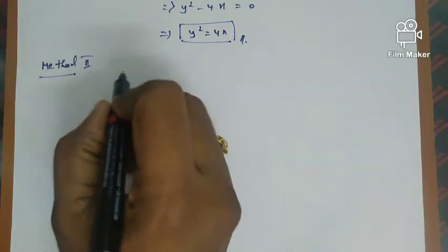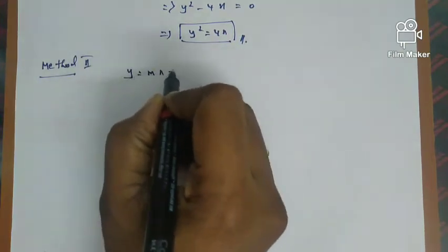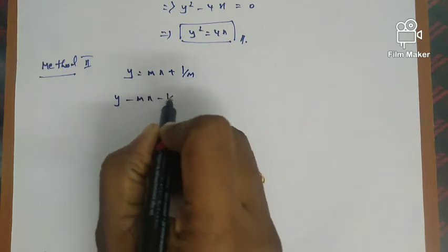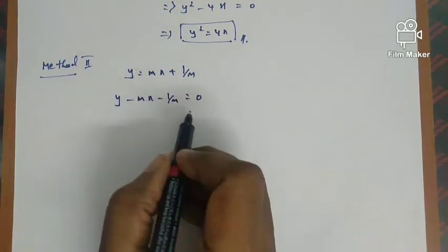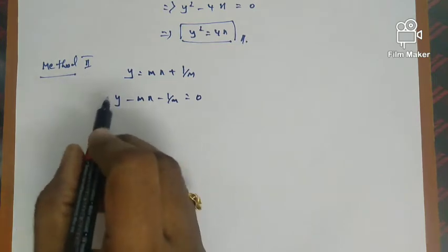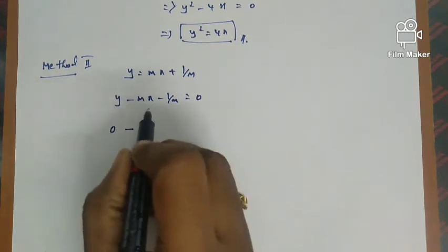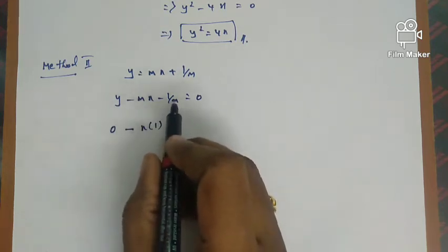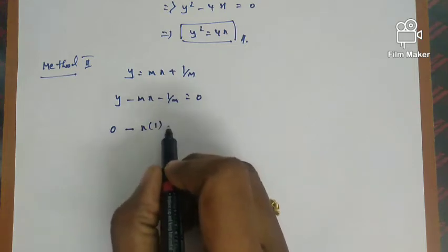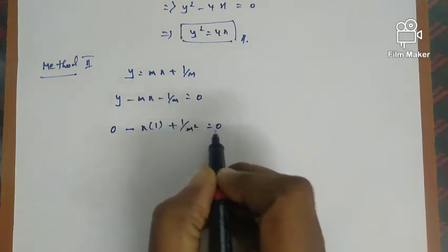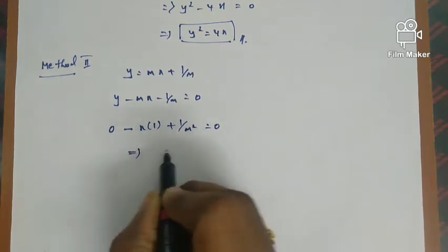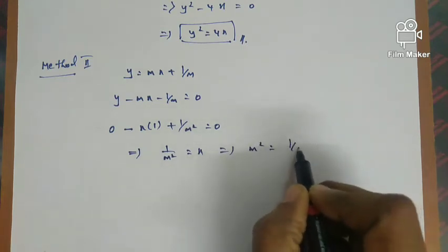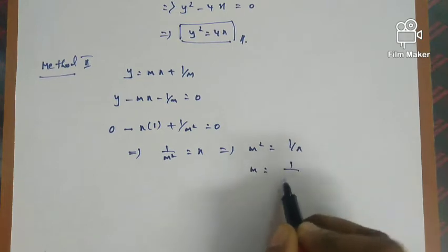Now Method 2 using the same equation. Given y = mx + 1/m (equation 1), rewrite as y − mx − 1/m = 0. Differentiating partially with respect to m: 0 − x + 1/m² = 0, so 1/m² = x, giving m² = 1/x and therefore m = 1/√x.